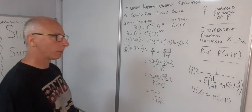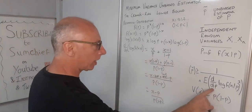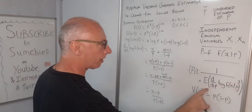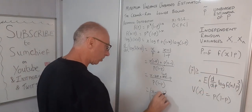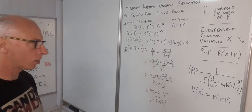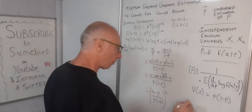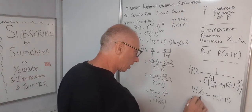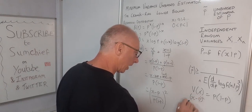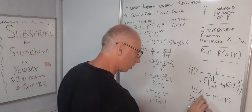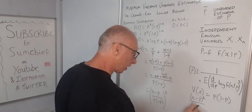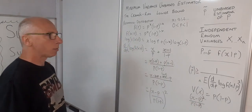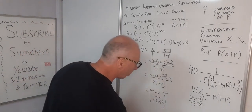Now we need to take the square of this expression and then find the expectation, since the Cramér-Rao formula requires the squared term. Squaring gives us X minus P squared in the numerator, and P squared times 1 minus P squared in the denominator.